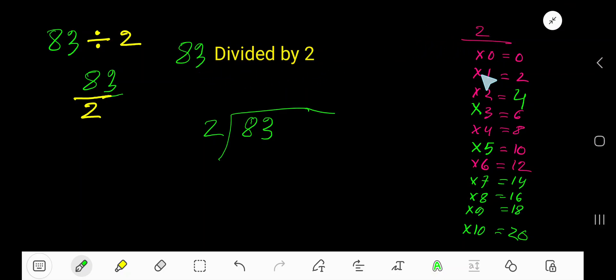83 divided by 2. 2 times 0 is 0, 2 times 1 is 2, 2 times 2 is 4, 2 times 3 is 6, 2 times 4 is 8. To find the multiplication table of 2, just add 2 to the previous step: 0 plus 2 is 2, 2 plus 2 is 4, 4 plus 2 is 6, 6 plus 2 is 8. Right?